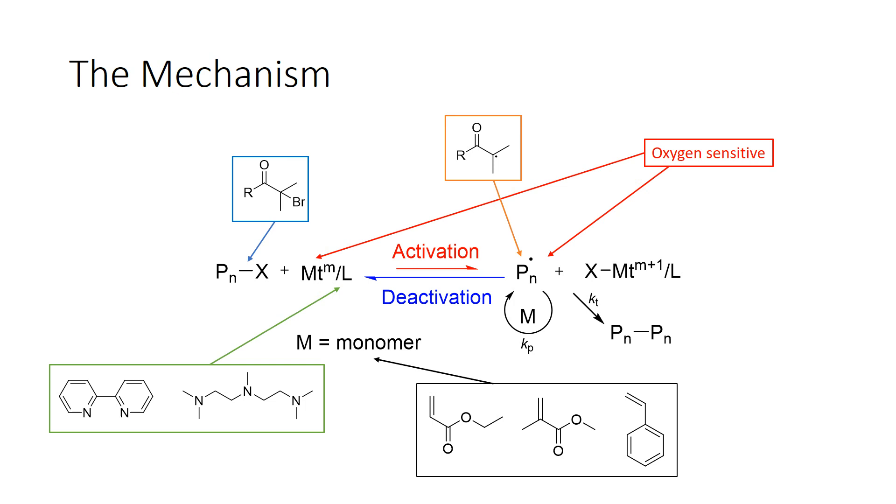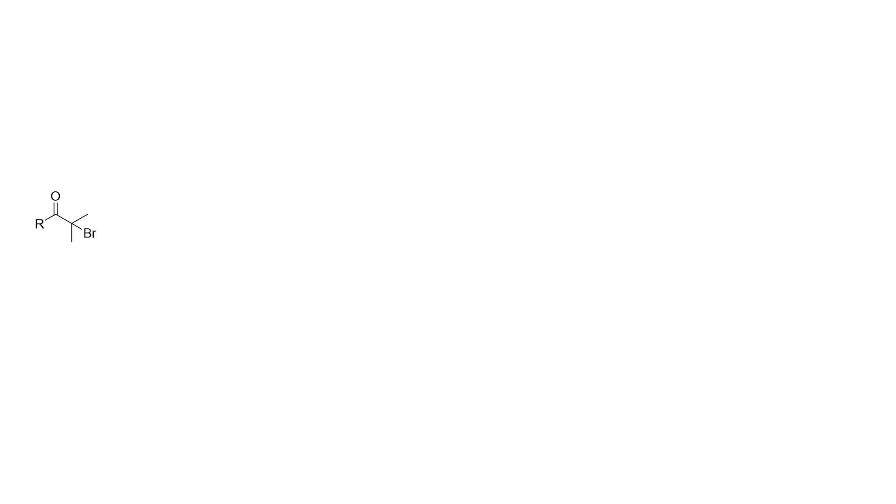So exactly how does an ATRP go? We have some kind of initiator here. So you have an activation process by this normally copper one species. You form the propagating radical. A monomer comes in, in this case methyl methacrylate. You react with the methyl methacrylate. You add it to the structure and now have another radical, which you deactivate by the copper two species. Again, forming the dormant species.